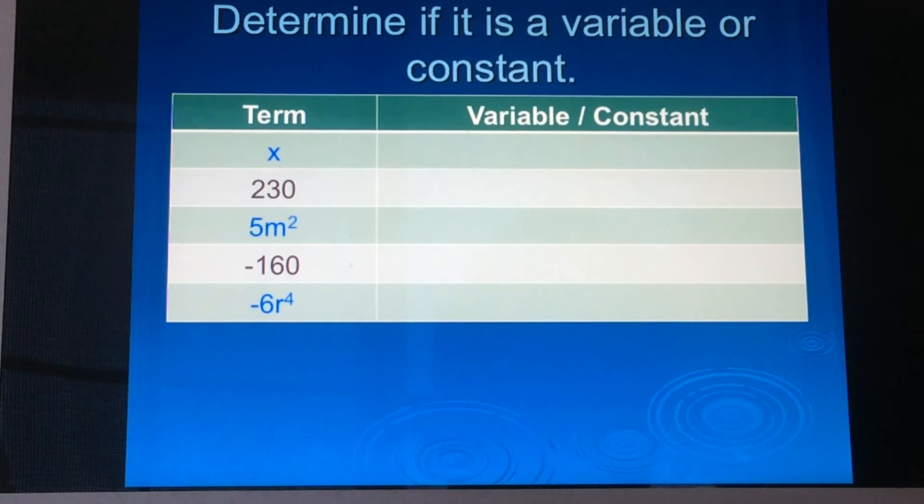Okay. So let's see if your answers are correct for this chart and for these questions. So the term x is a variable. The number 230 is a constant. 5m to the second power. That may be a little bit tricky because it does have a number in it, but it also has a variable. Let's see what we get. If you got variable, you're correct. And the reason why it is a variable is because it has a variable in there. As long as it has, as soon as it has a variable, it is known as a variable. The five in that expression would be known as the coefficient and not a constant.